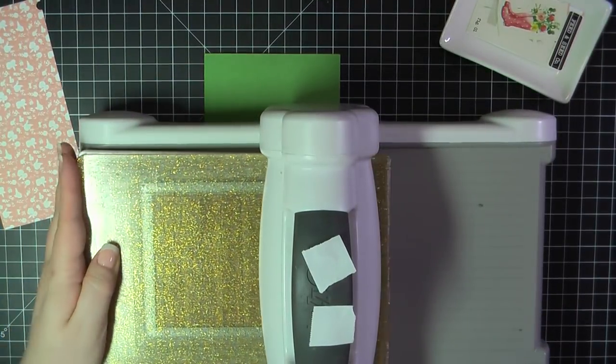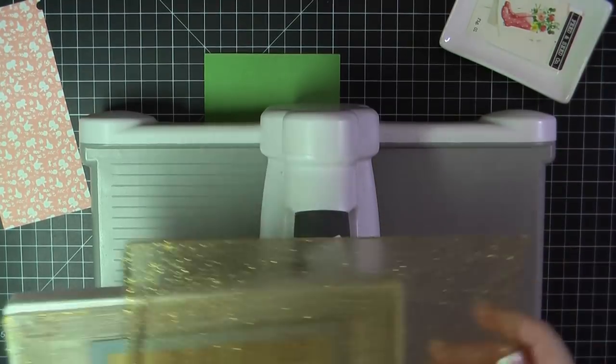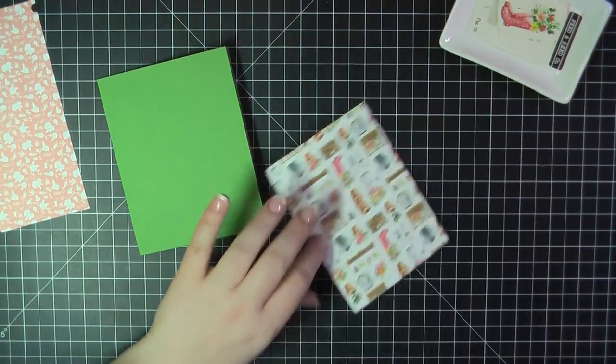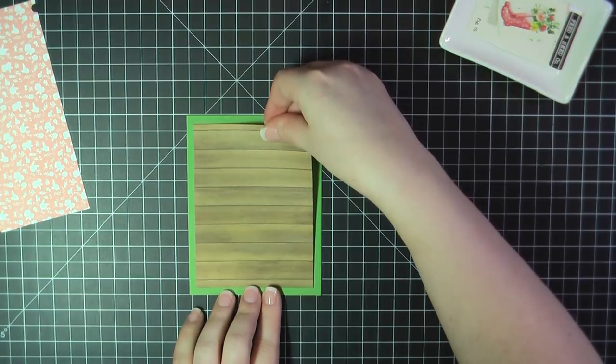Jumping into card number one, I'm going to use this pretty woodgrain paper for my background and I'm trimming that out using my MFT Blueprints 32 frame die. Here I've got some ATG gun and I'm going to attach that to the top of this green card base.